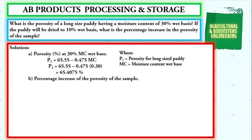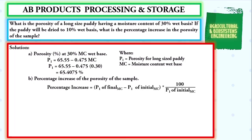The next value we are going to solve is the percentage increase of the porosity of the sample. To solve for percentage increase, we use the formula: percentage increase equals the porosity of the final moisture content minus the porosity of the initial moisture content, multiplied by 100, all over the porosity of the initial moisture content. We now solve for the porosity at the final moisture content of 10% using the same formula: P1 equals 65.55 minus 0.475 times 0.10, giving us a porosity of 65.5025%.